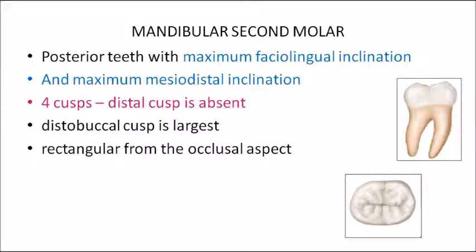The mandibular second molar has the maximum faciolingual and mesiodistal inclination among posterior teeth. It has only four cusps — the distal cusp is absent. The distobuccal cusp is the largest (unlike in the first molar where the mesiobuccal cusp was largest). From the occlusal aspect, its outline is rectangular.